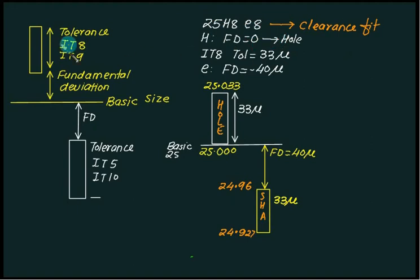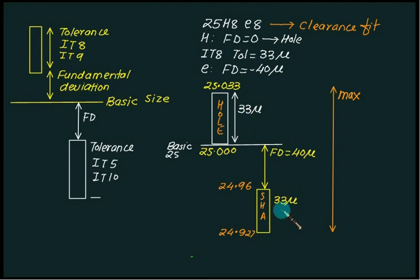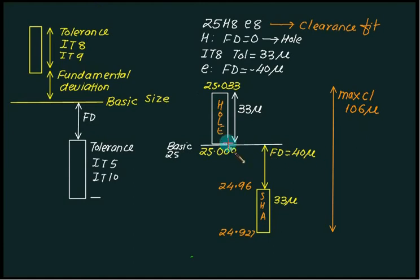To find maximum clearance, select maximum hole and minimum shaft. Maximum clearance equals 33 plus 40 plus 33 equals 106 microns, that is 0.106 mm. Minimum clearance is minimum hole minus maximum shaft: 25 minus 24.96 equals 40 microns. The minimum clearance is also called the allowance.